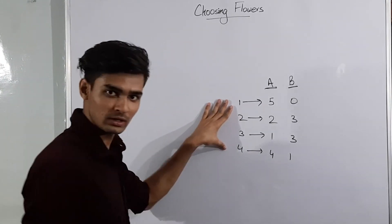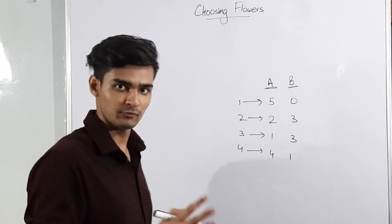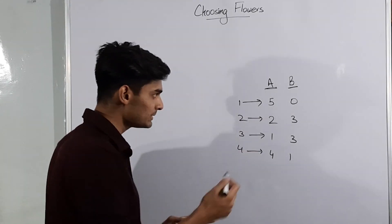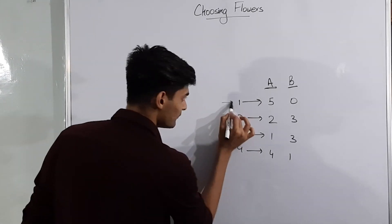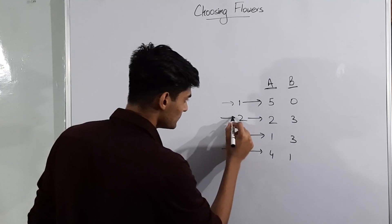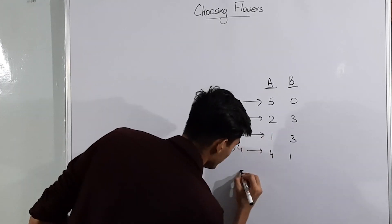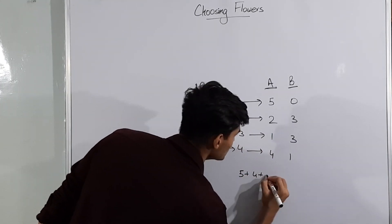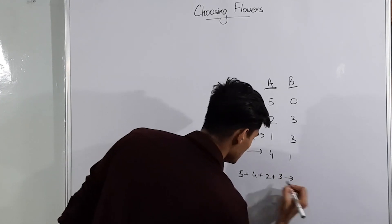So let's take an example here. Let's say we have these different 4 types of flowers and we have to choose 4 flowers only. So what will be the optimal answer? We can see that we will first take a flower from the first type, then a flower from the fourth type and then 2 flowers from the second type. So basically 5 plus 4 plus 2 plus 3 which makes 14.